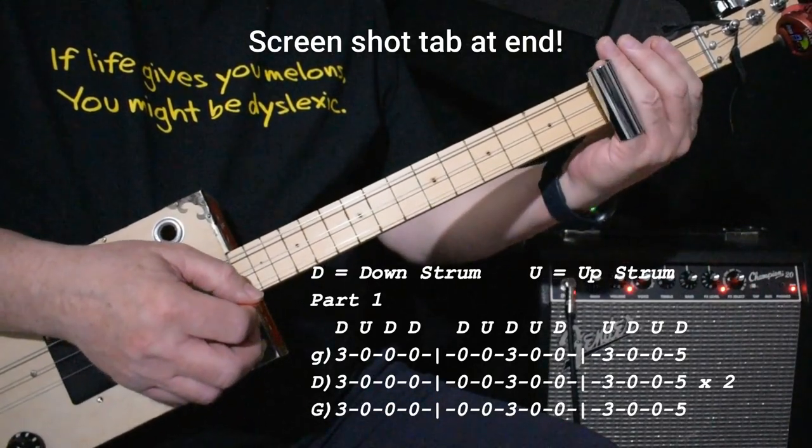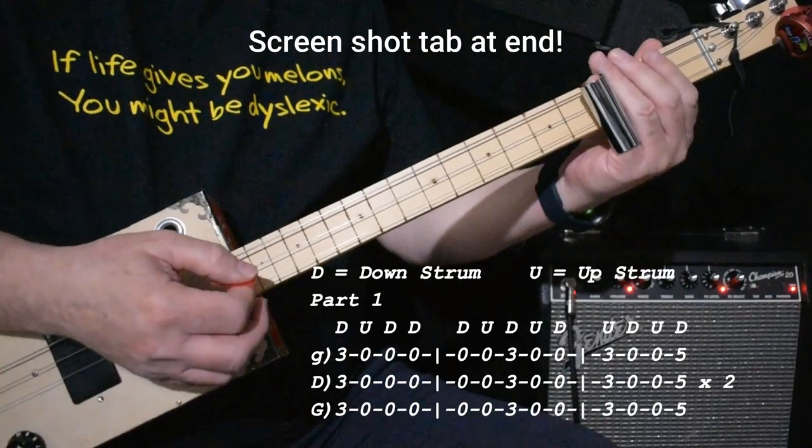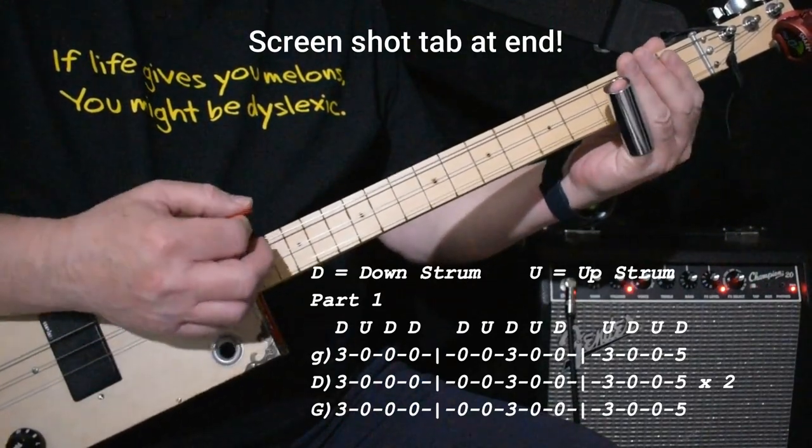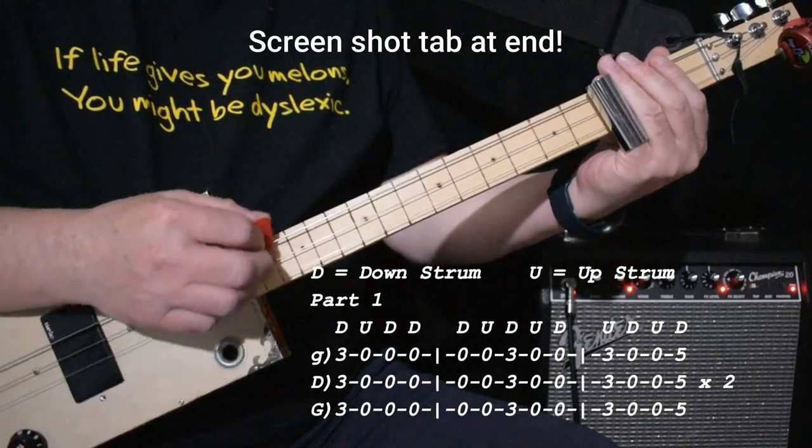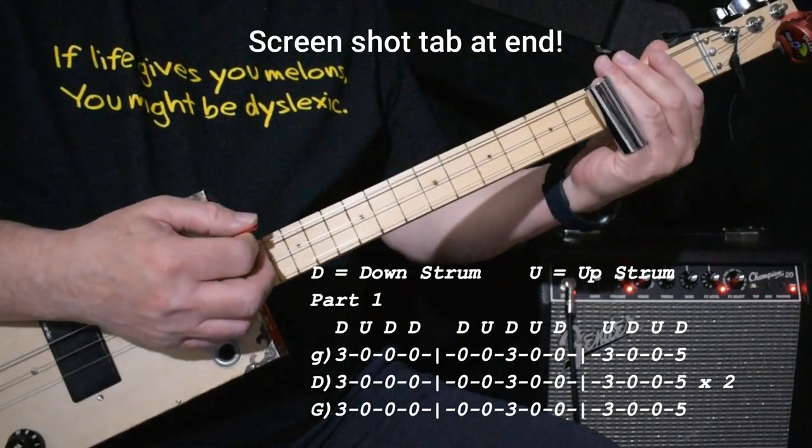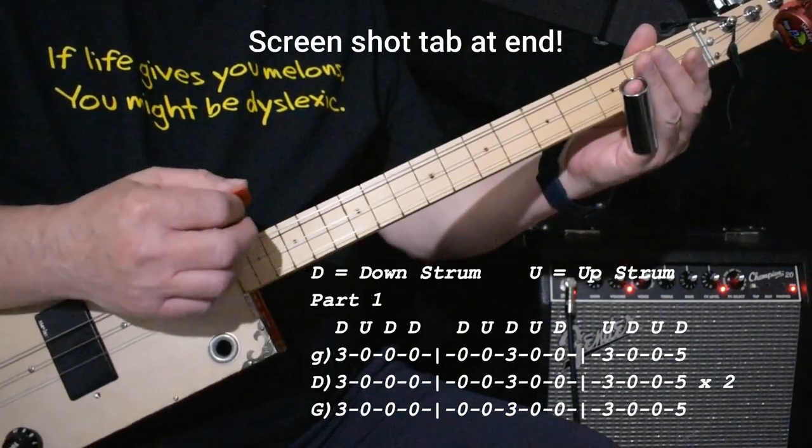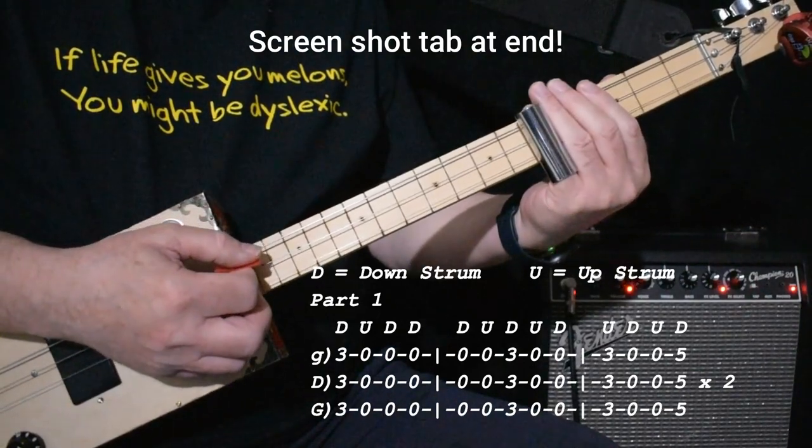And then we keep on going. We don't pause like we did the first time. So that's down, up, down, then three on the up, and then down, up, and then the five brings us to a down.